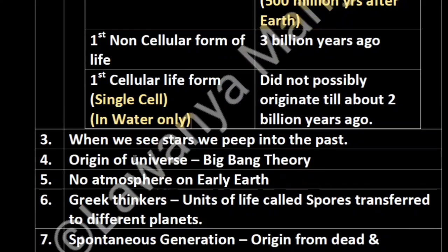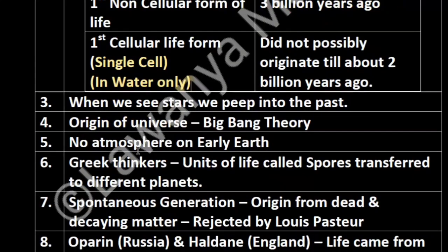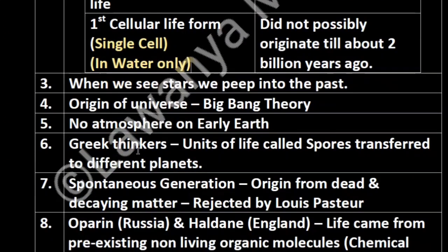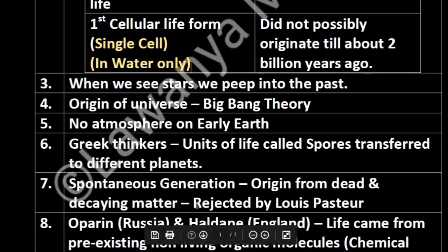The origin of the universe is best explained by the Big Bang Theory. No atmosphere was present on the early Earth. Greek thinkers thought that units of life called spores are transferred to different planets. The Spontaneous Generation Theory said that the origin of life is from dead and decaying matter, but it was rejected by Louis Pasteur.